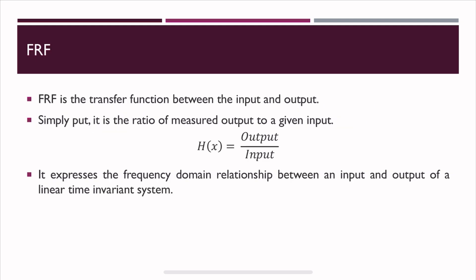FRF is a transfer function between the input and the output — basically, it is the ratio of output to a given input. If I excite a structure, I'm giving an input and the structure will respond by giving an output. So if I divide the output by the input, I get the frequency response function or the transfer function. It expresses the frequency domain relationship between an input and output, and is not dependent on time.